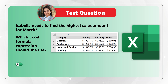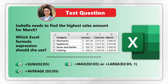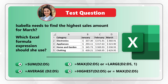You need to select one of four choices. Choice A: the formula would be SUM with the data range D2 through D5. Choice B: the formula would be AVERAGE with the data range D2 through D5. Choice C: the formula would be MAX with the data range D2 through D5, or LARGE with the data range D2 through D5 comma 1. Choice D: the formula would be HIGHEST with the data range D2 through D5, or MAX with the data range D2 through D5.